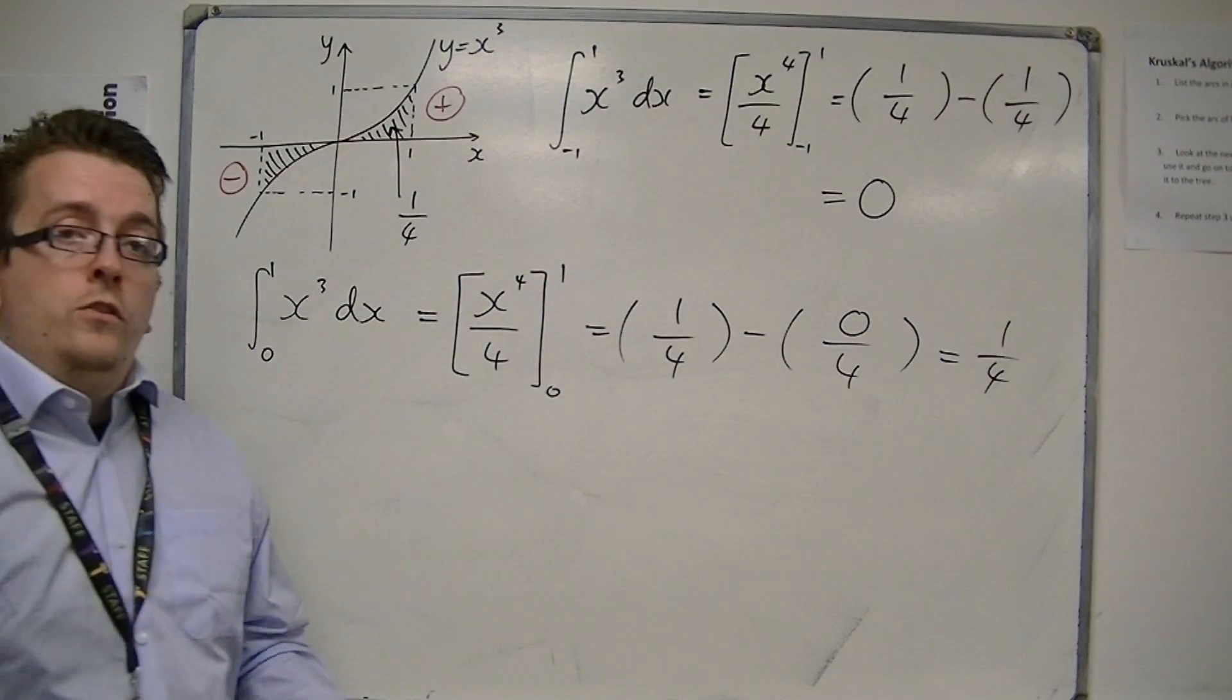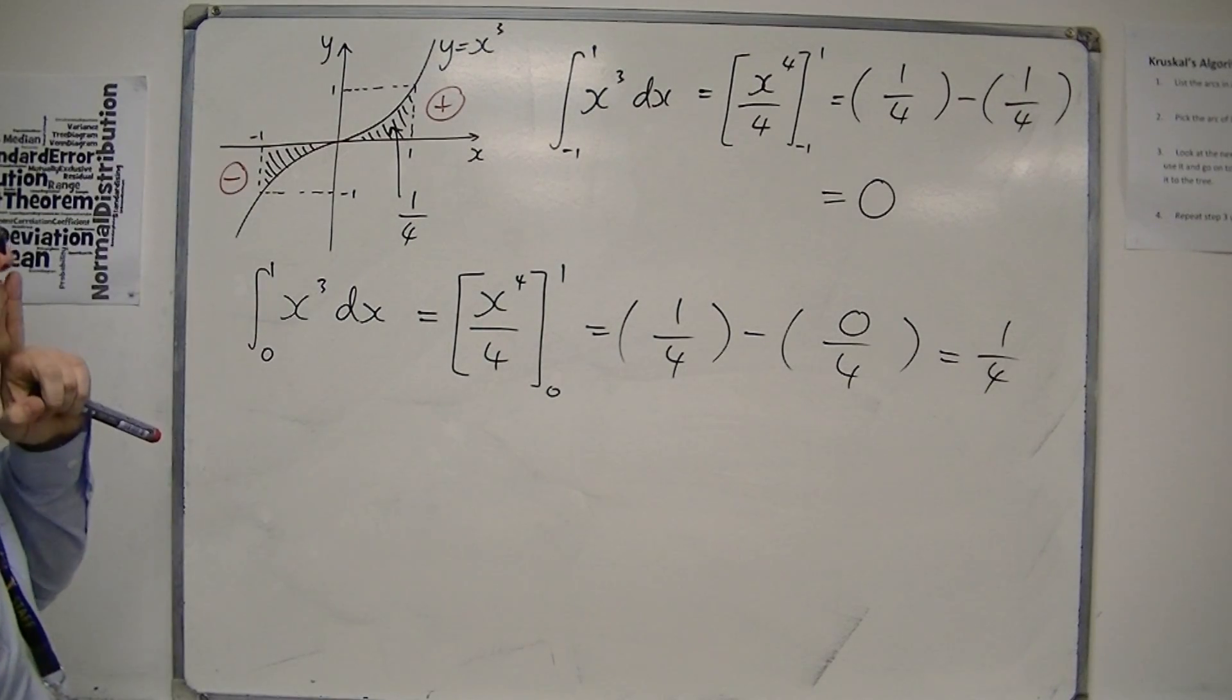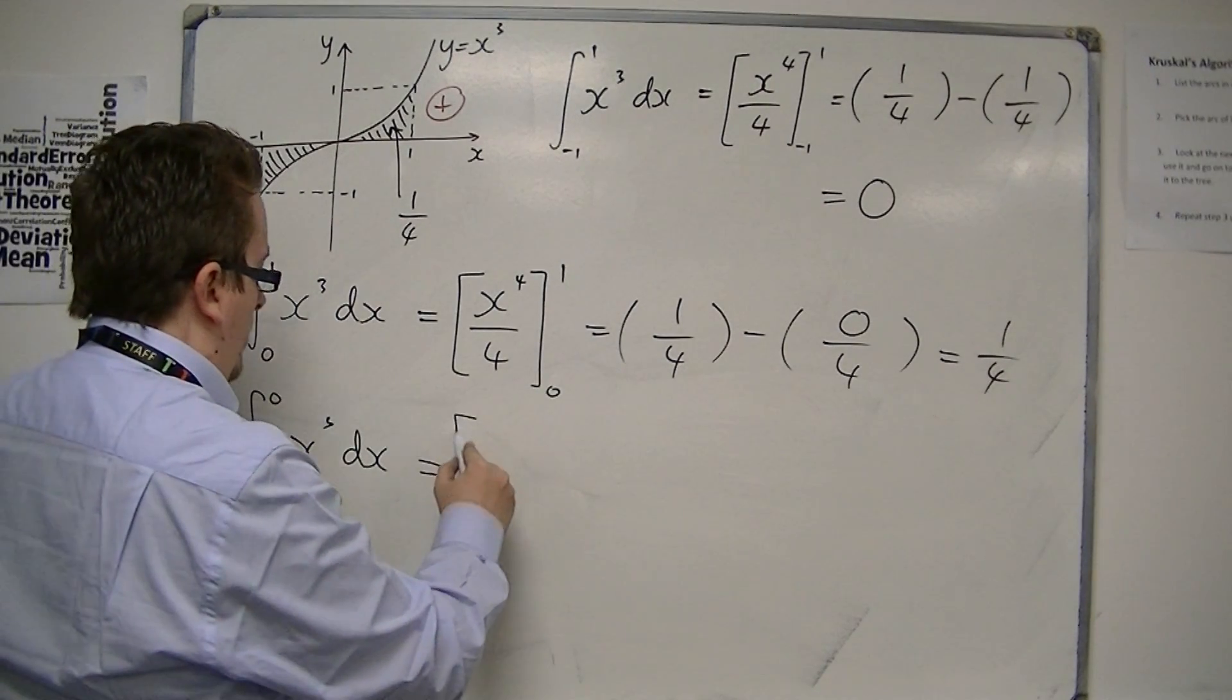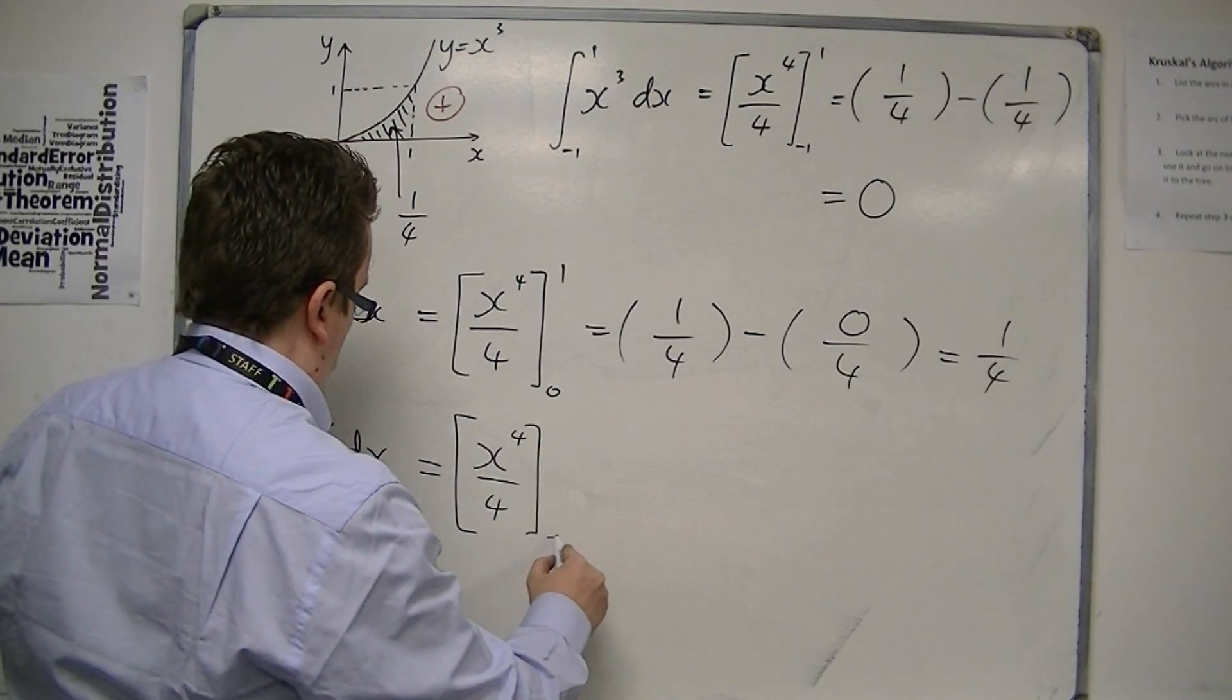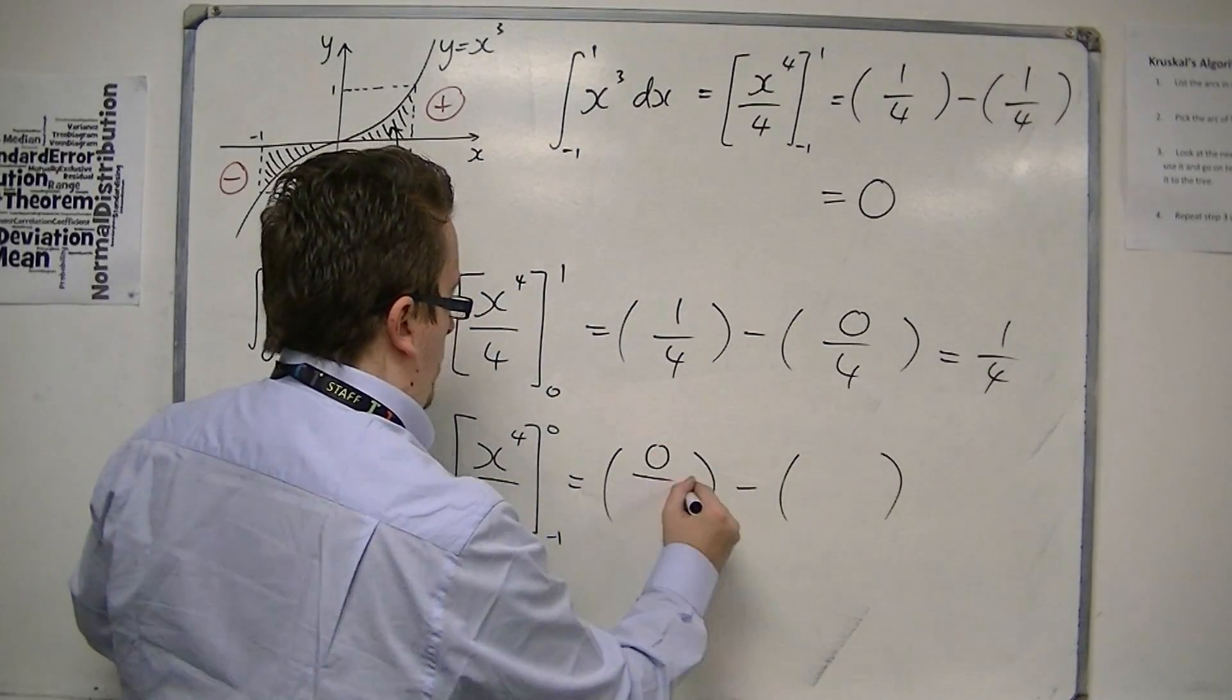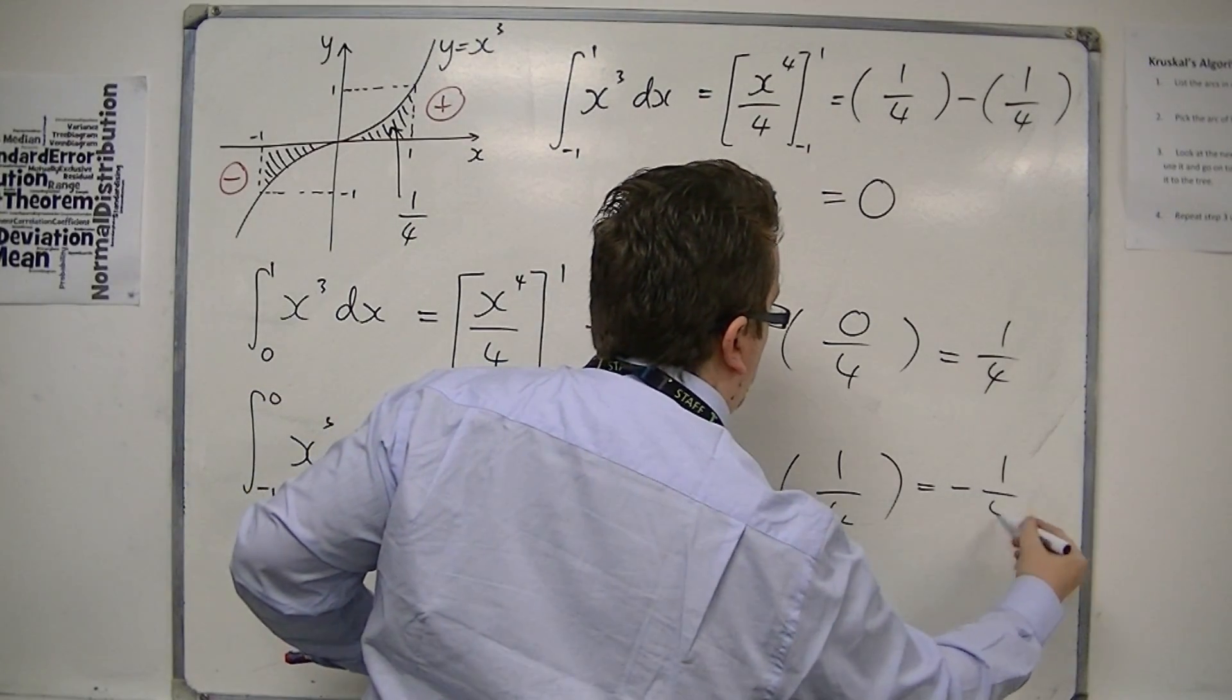And then you could find the integral between minus 1 and 0. So we do the minus 1 and 0 of x cubed dx. And we get x to the 4 over 4, between minus 1 and 0. So we get 0 over 4, take away 1 over 4. So that's minus a quarter.